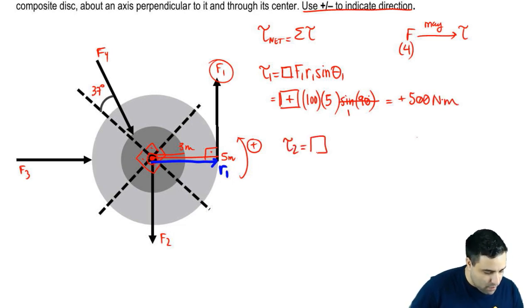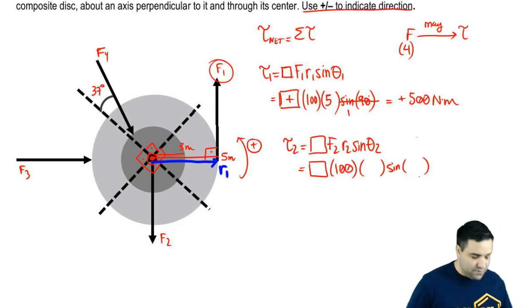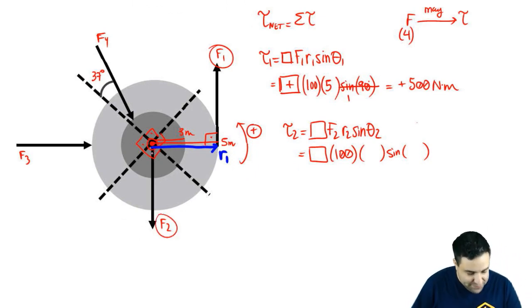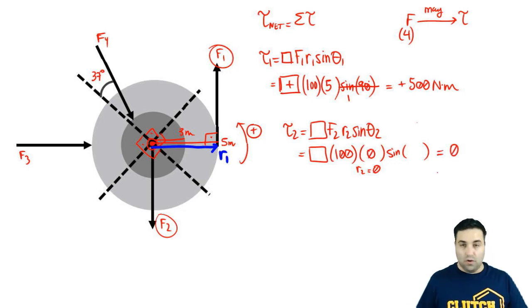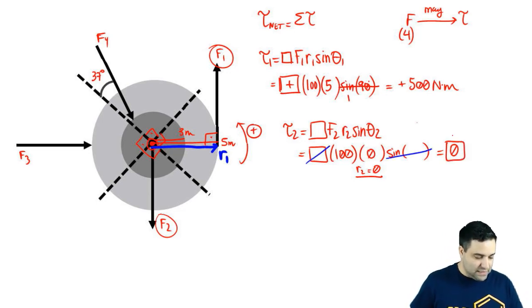So torque two, box, F2, R2, sine of theta two. I know F2 is 100, but I got to figure out R and theta. So I'll leave those blank. F2 is right here. F2 acts in the middle of the, acts on top of the axis of rotation. Therefore, the R2 will be zero. R2 equals zero, which means there is no torque at all. When you have something that pulls on the axis of rotation, it produces no torque because there is no R, and you can see from the equation that the whole thing becomes zero. So it doesn't matter what the angle is, and it doesn't matter what the sign is because you just have zero.